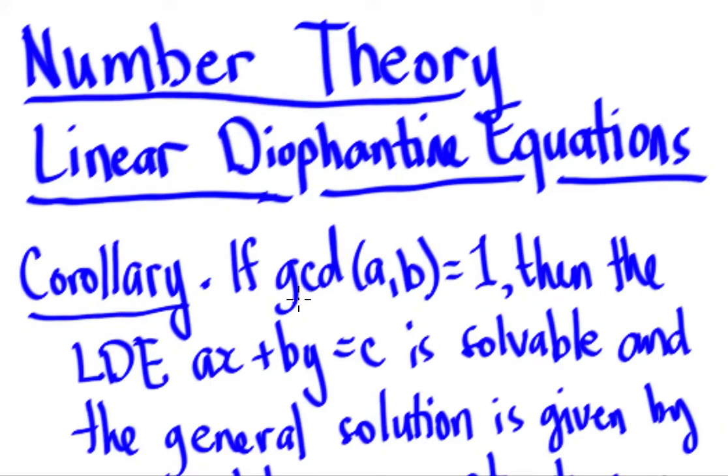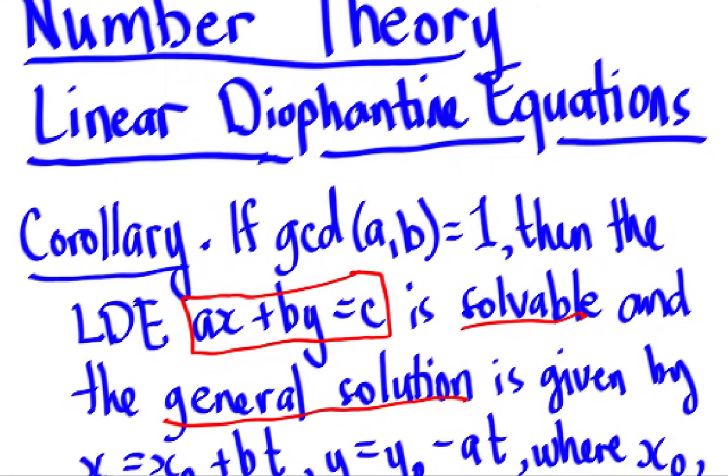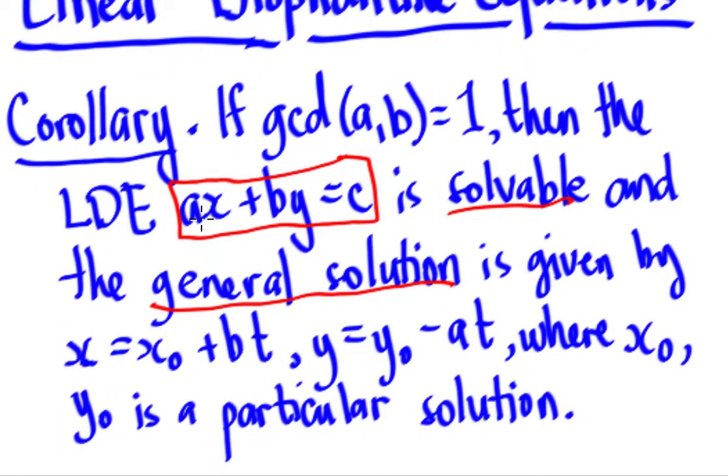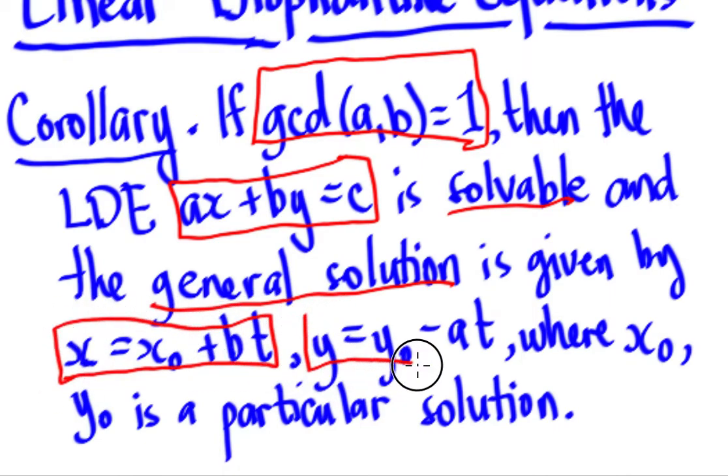The corollary states that if the GCD of the certain linear diophantine equation is 1, then the linear diophantine equation ax plus by equals c is solvable. And the general solution is given by x equals x sub 0 plus bt, and y equals y sub 0 minus at, where x sub 0 and y sub 0 is a particular solution of that linear diophantine equations.